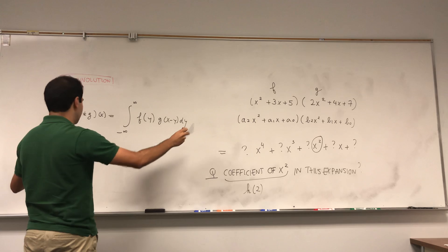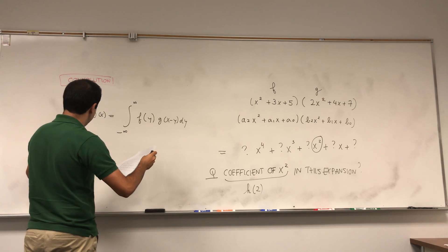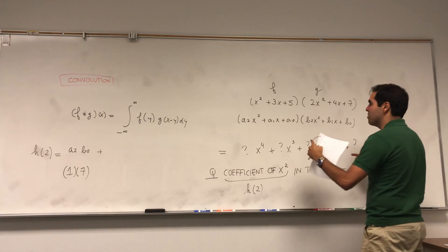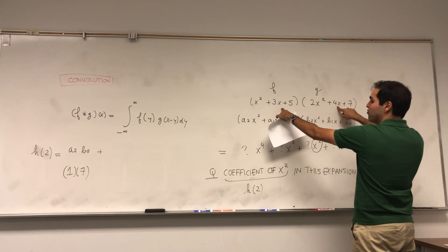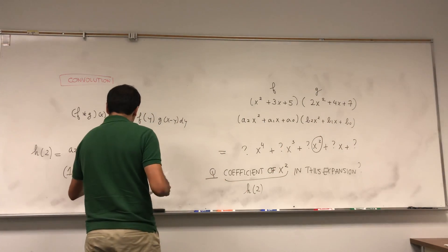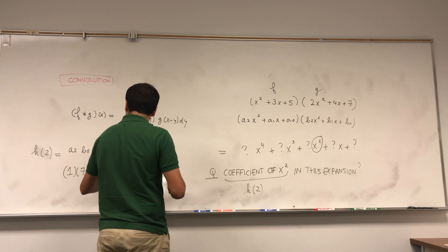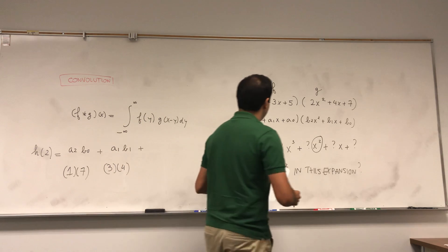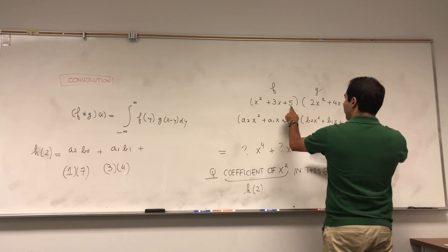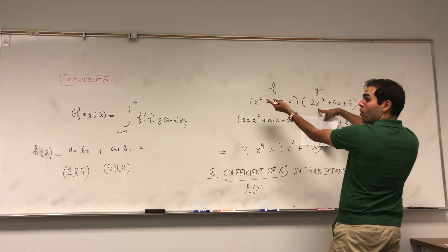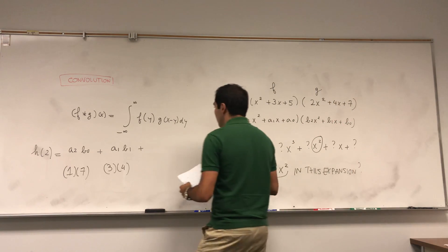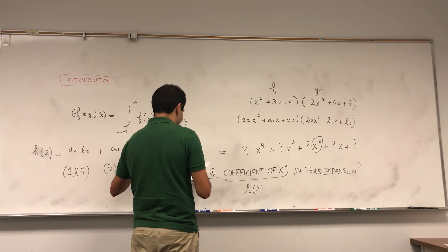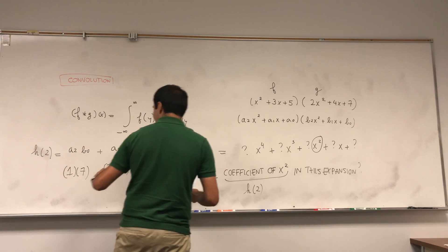And then let's see, what else sums to 2 in terms of the powers? Well, 3x times 4x, so 3 times 4, which gives you 12, and that would be a₁ and b₁. And lastly, what do we have? 5 times 2x². The coefficients sum to 2, so I guess a₀ times b₂. So 5 times 2, and I think if you do it you get 29.